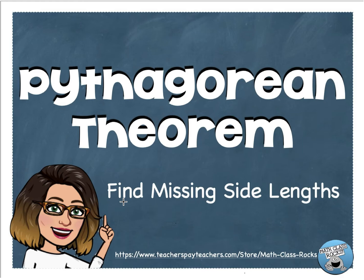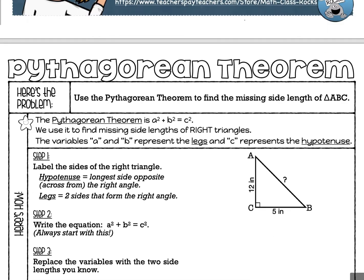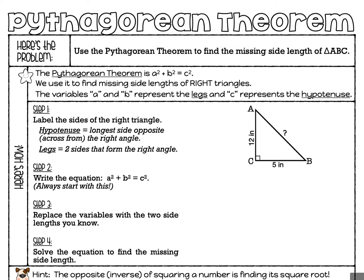Hey everyone, today's lesson is using the Pythagorean Theorem to find missing side lengths. You're definitely going to need to grab a calculator today and a pencil, and this is the page that we're going to be working on. If you have your lesson worksheet, take that out now and follow along, and if not, you can still follow along to see some really great examples and learn how to use the Pythagorean Theorem.